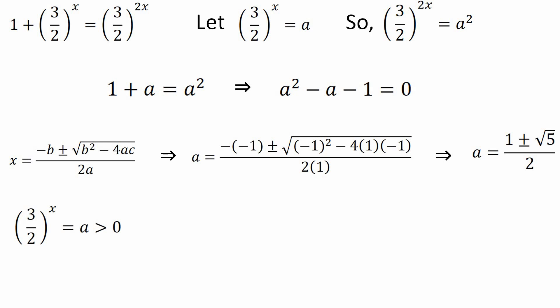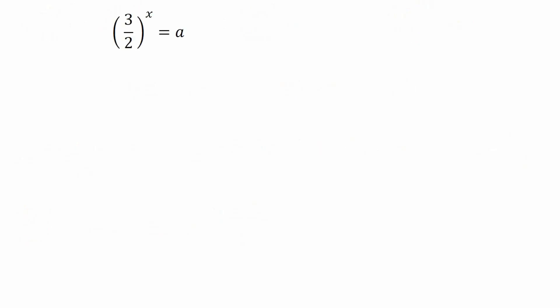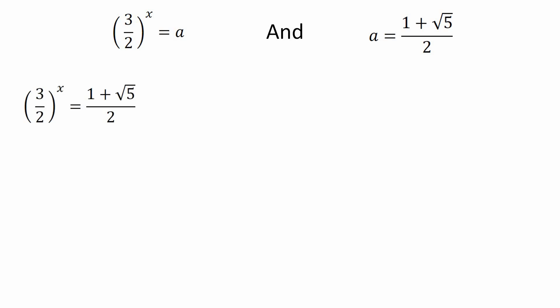Now, since (3/2)^x is always greater than 0, we only consider the positive value. So a = (1 + √5) / 2. We have assumed (3/2)^x = a, and we found a = (1 + √5) / 2. Substituting back, we get (3/2)^x = (1 + √5) / 2. Now we can take log on both sides to find the value of x.